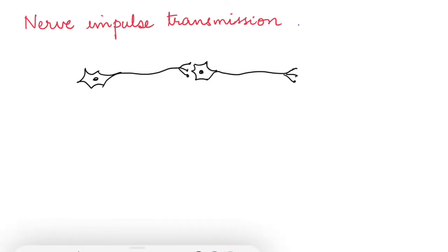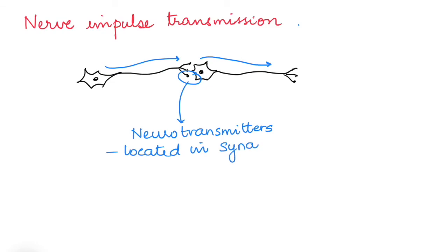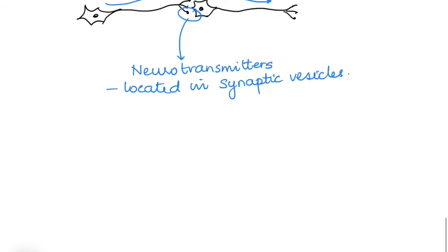The nerve impulse transmission happens only in one direction. The reason for this is that the neurotransmitters are present only in the synaptic bulb, that is in the vesicles present in the synaptic bulb, and are then released into the cleft there. So this is the reason it passes from the axon terminals to the dendrite of the other. So only one way of transmission.